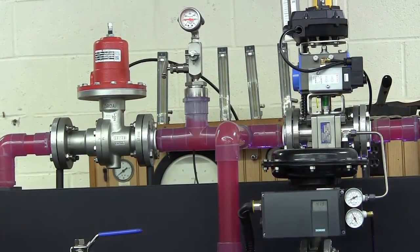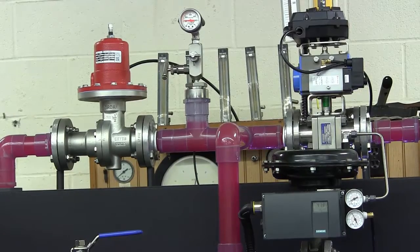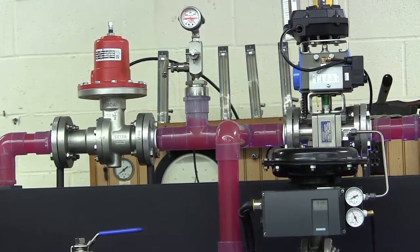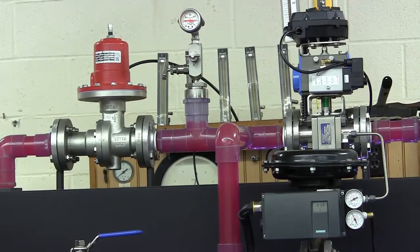The valve will modulate to maintain the pressure at 10 psi. When the upstream pressure falls below the set point, the mark 50 will return to the closed position.